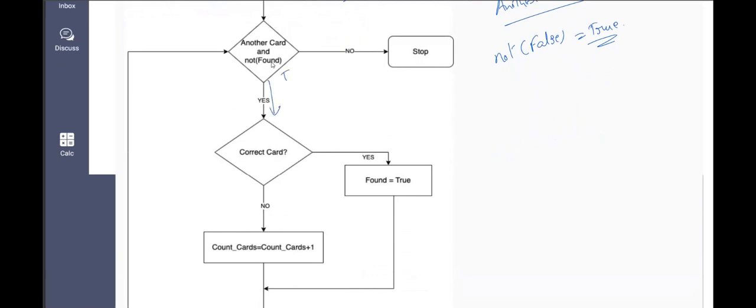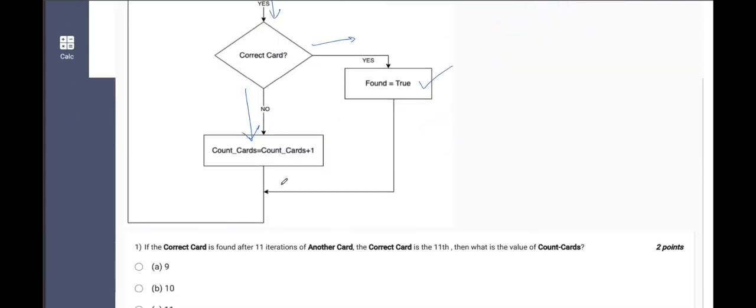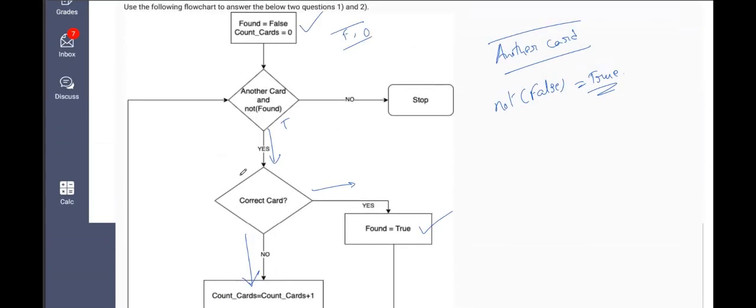We move on to the next branch which checks for the correct card or not, if the picked up card is the correct card or is a suitable card. If that is the suitable card, then we update found with true. If it is not the suitable card or if it is not the required card, then we increment the value of count_cards by one. This is a repetitive process. Again, this process comes back to this point and goes on to be a repetitive cycle, which is termed iteration.